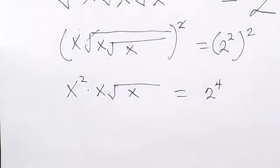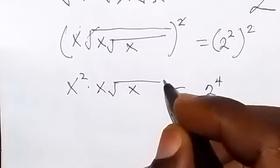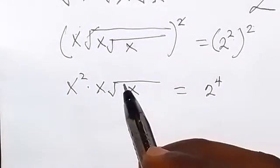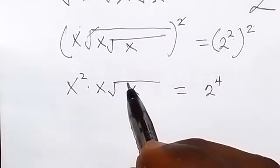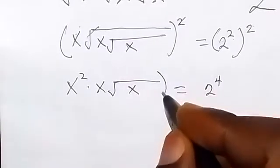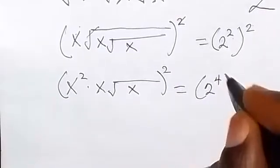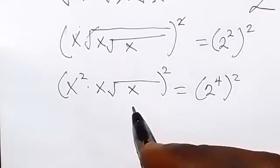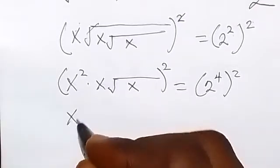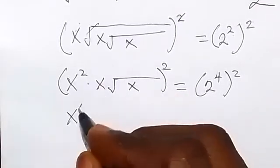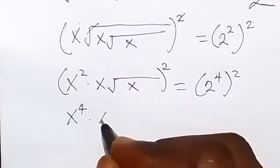We can still take the square again of both sides so as to cancel the square root here. Opening this up, x squared becomes x raised to the power 4, then times x raised to the power 2.